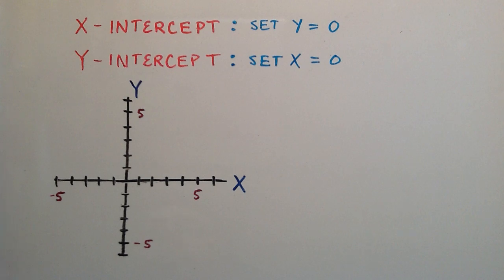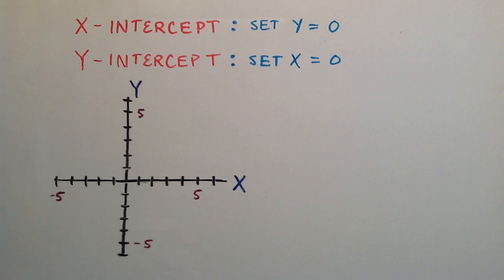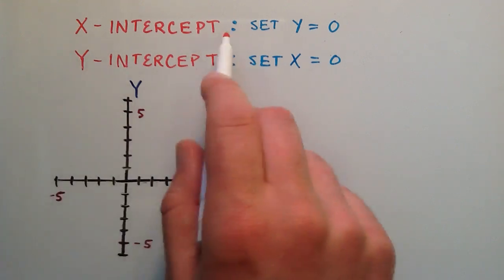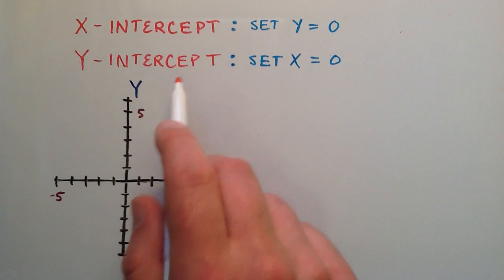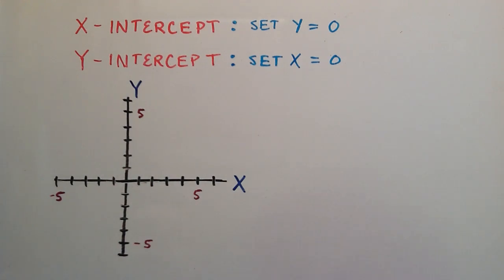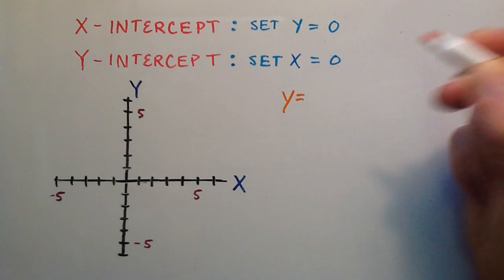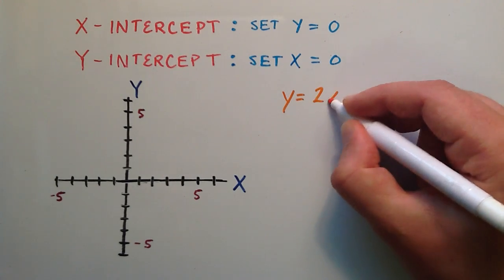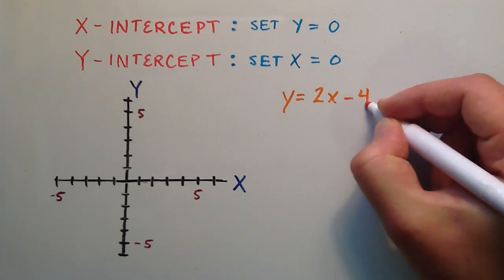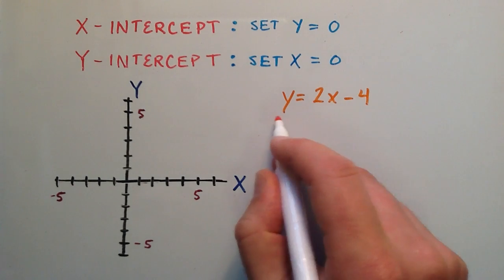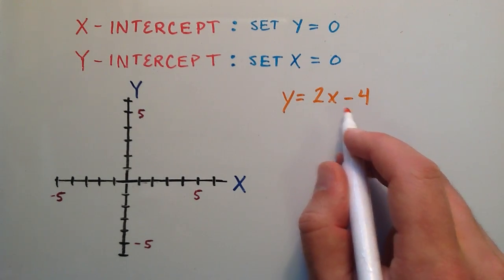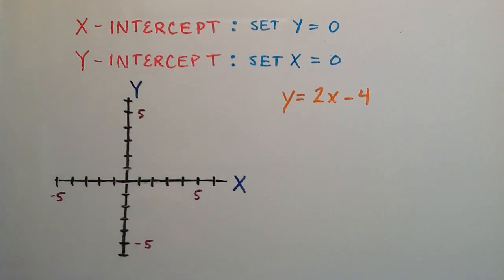Hey everybody, this is Paul. Welcome to Lesson 60 in the Intermediate Algebra Series. In this tutorial, we're going to be talking about the x and y intercepts of a line. The line we're going to be working with today is represented by the equation y is equal to 2x minus 4. This is an equation of a line, and we're going to find its x and y intercept.